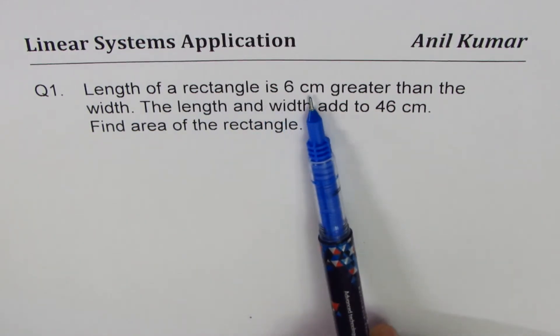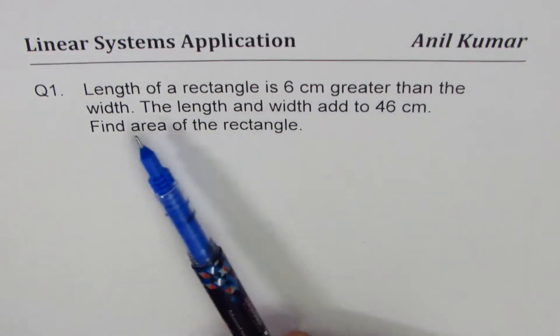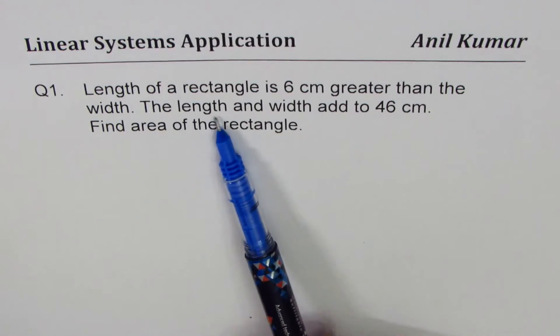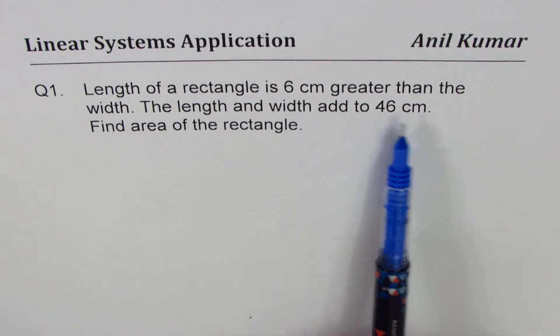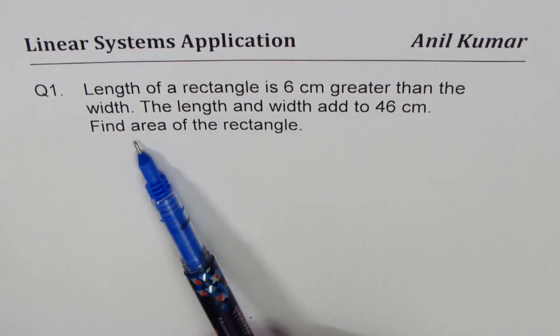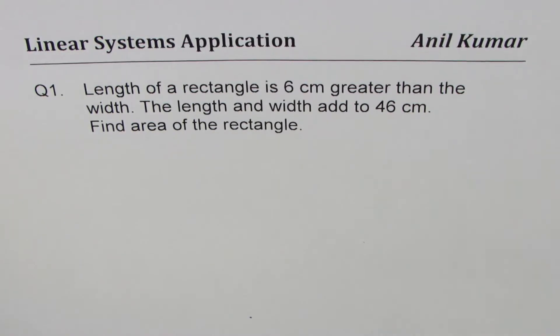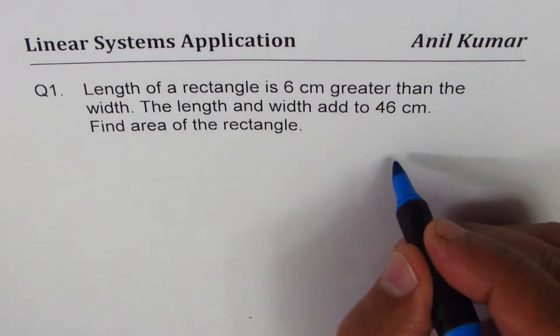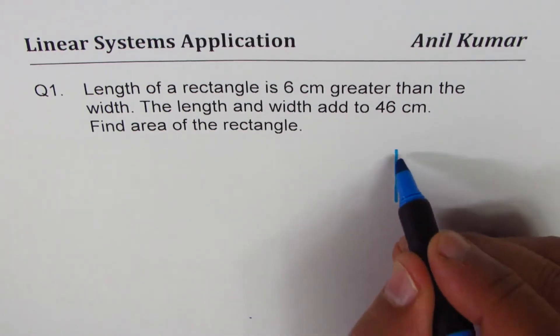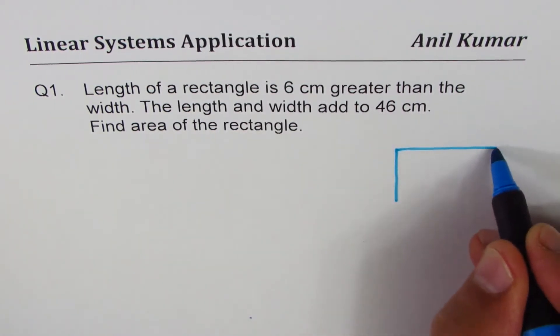Question number one: the length of a rectangle is 6 cm greater than the width. The length and width add to 46 cm. Find the area of the rectangle.